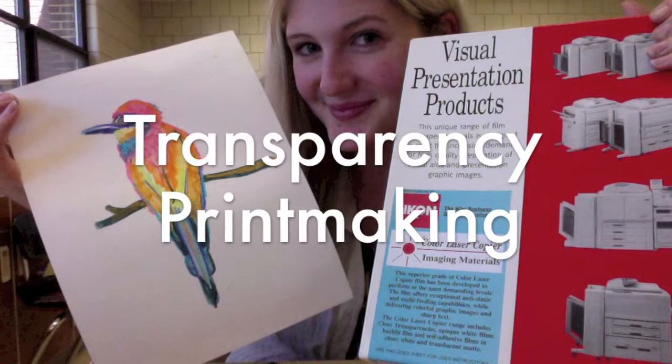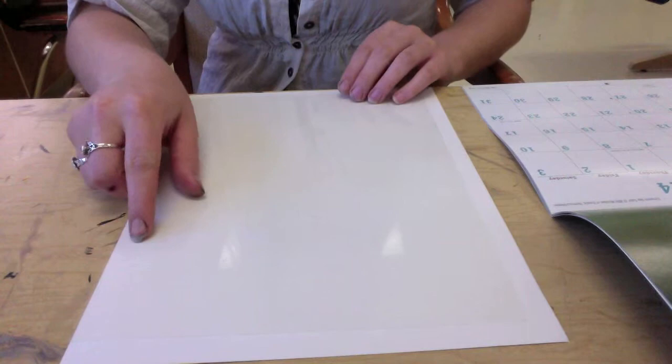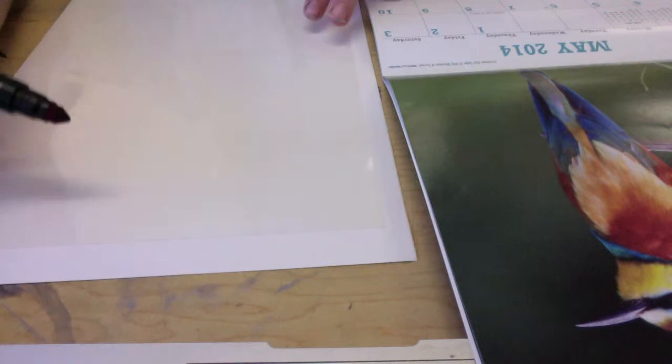We will be creating our own John James Audubon inspired prints using transparencies. All you need for this project are some transparencies, some paper, and a picture to use as inspiration for your print. You'll also need some markers. Water-based markers are the best since they can just wash right off and they transfer to the paper really well.